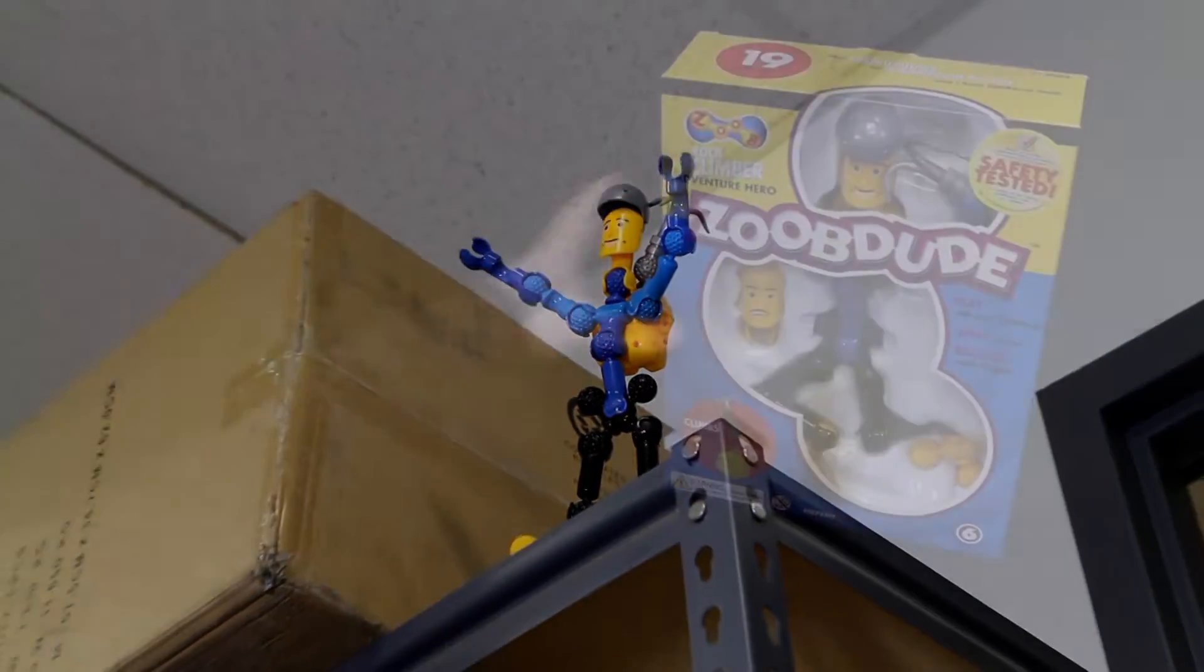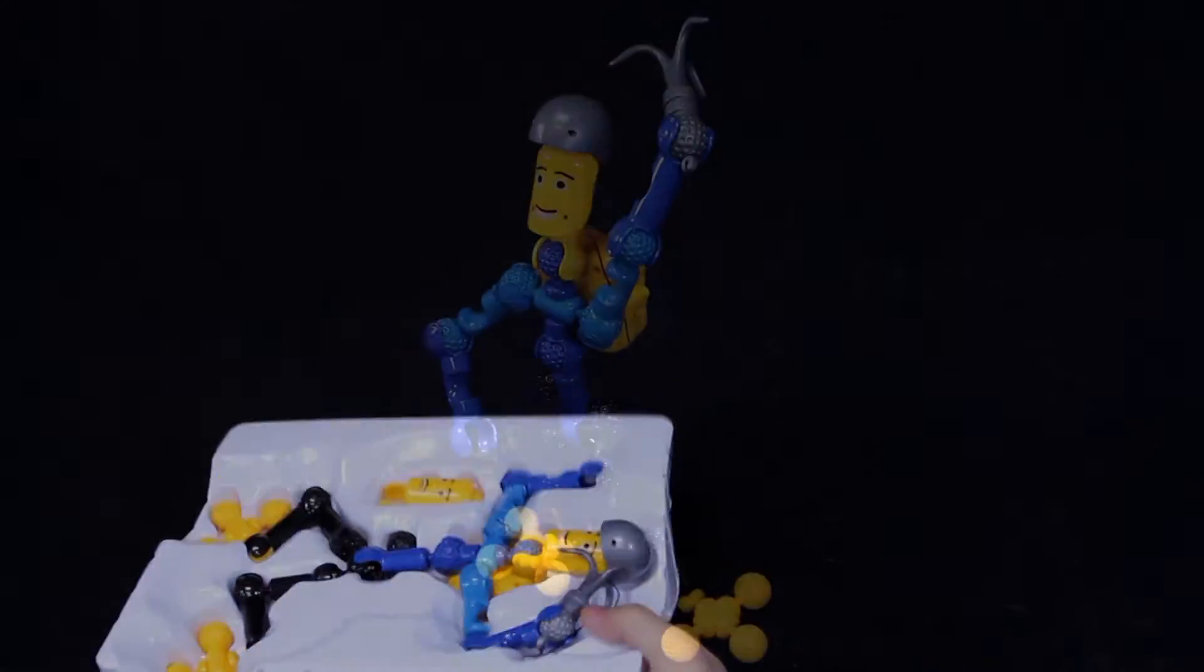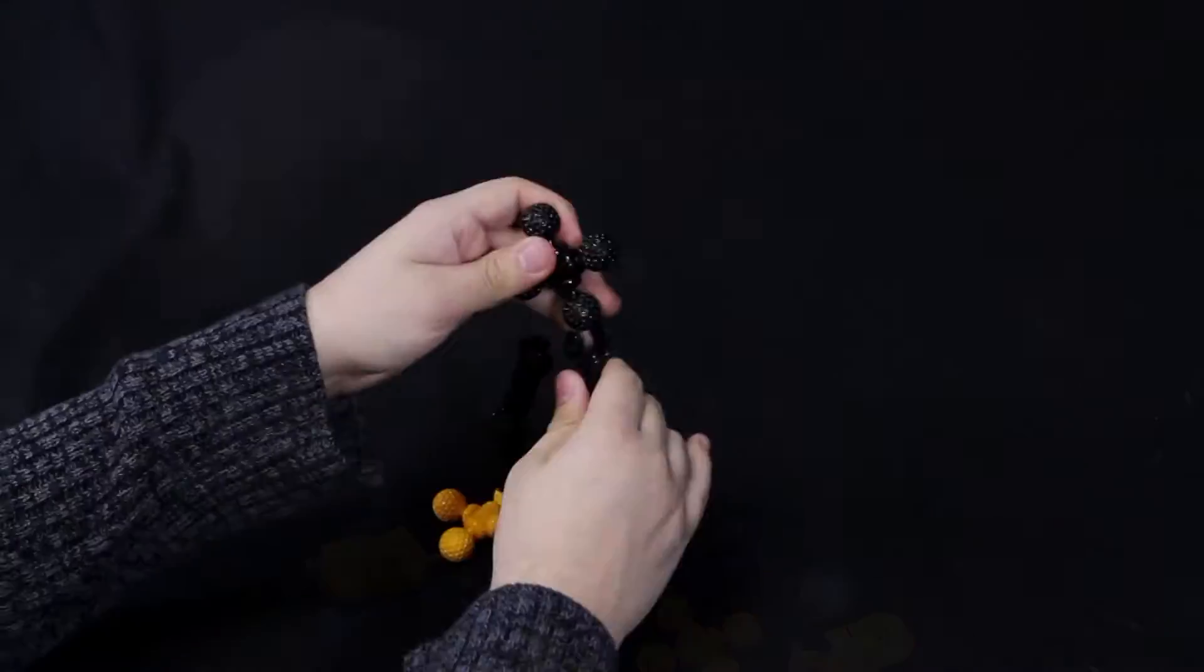The Zoobdude Rock Climber is a pre-assembled adventure hero that kids can snap apart and rebuild again and again, each with its own working grappling hook.